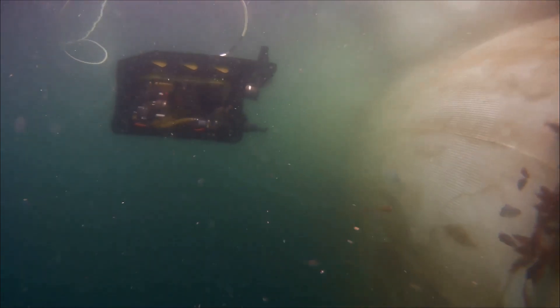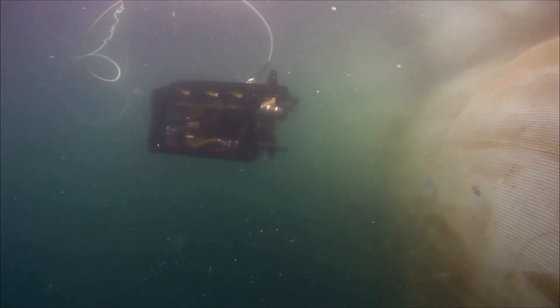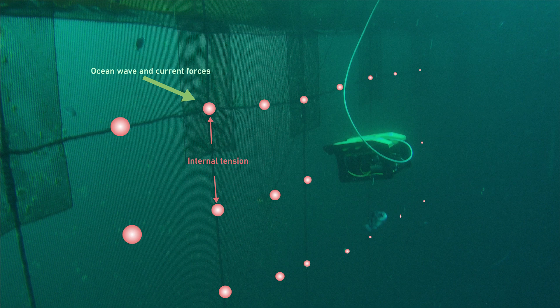In this work, we propose a novel method that estimates the shape of a net pen in real time by using measurements from a forward-facing DVL attached to the robot. We model the net pen numerically as a set of connected nodes whose dynamics are subjected to forces from waves and currents and internal tension.